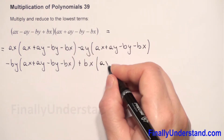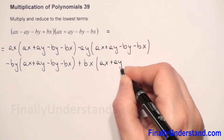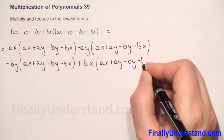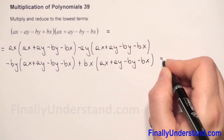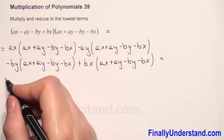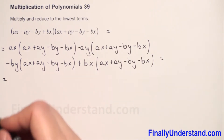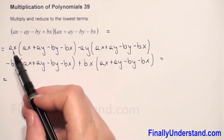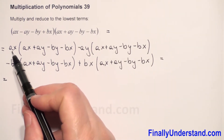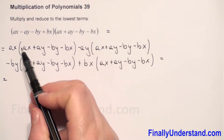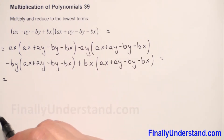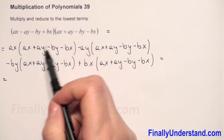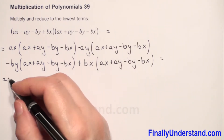And now we have positive BX times this whole expression in the second parenthesis: AX plus AY minus BY minus BX. This is equal. Now we have to use the distributive law of multiplication. First, we have to distribute AX over each term in the polynomial.